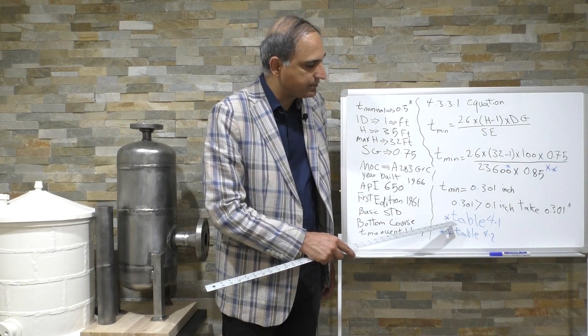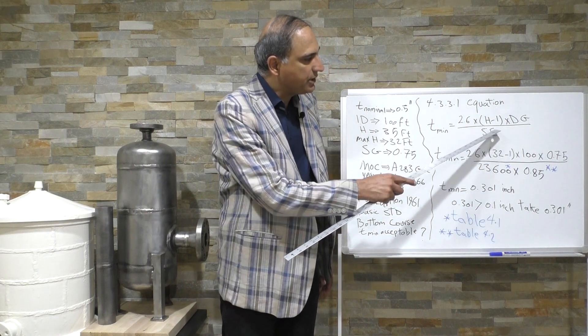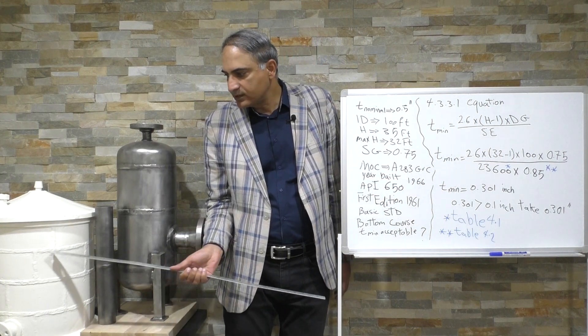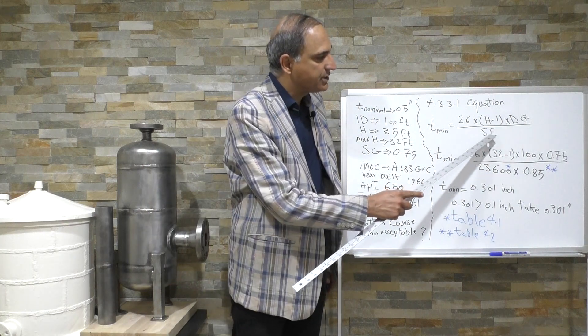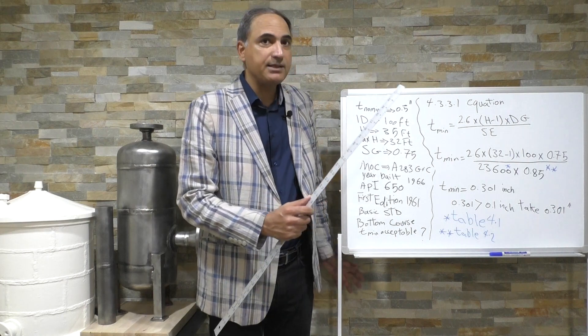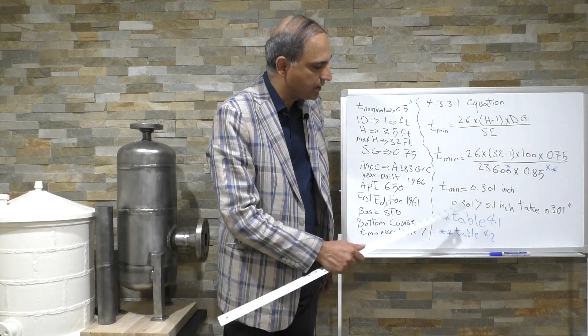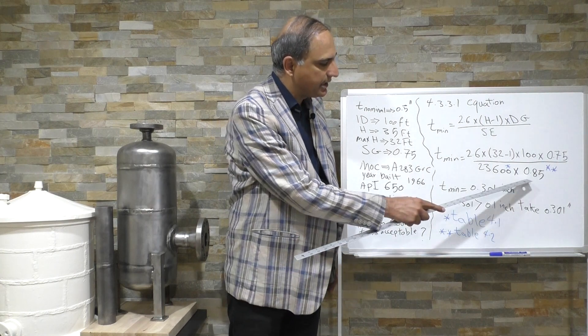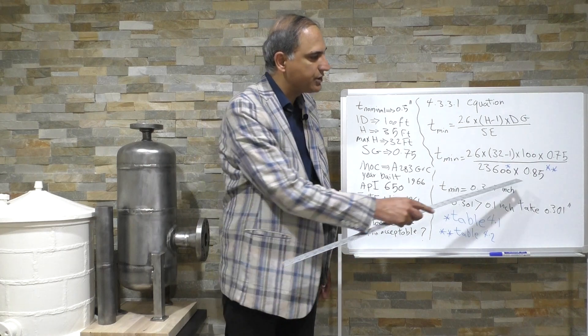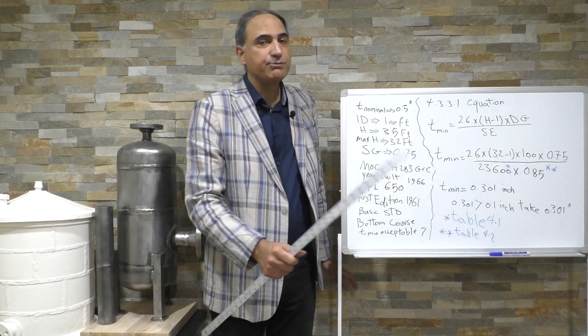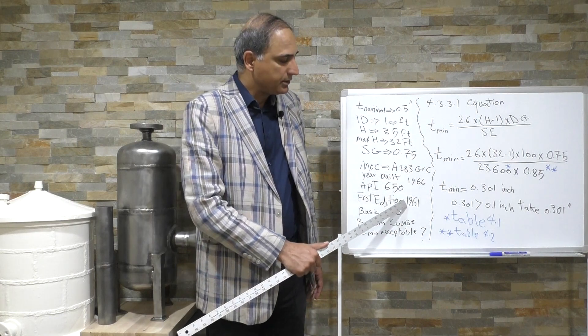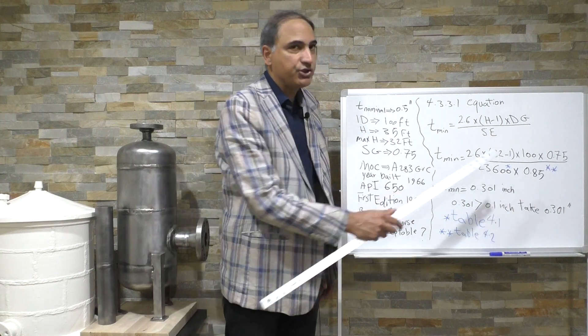I read this from table 4.1. We also need joint efficiency, the joint efficiency of these welds that you can see in here. We have to put a joint efficiency here and that comes from a table on the API 653. We are in API 653, table 4.2, which indicated for a design code first edition 1961 we have to use 0.85. So for finding the E you have to refer to table 4.2.